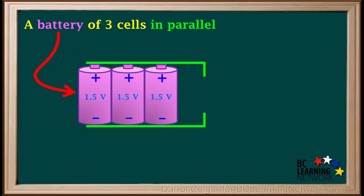When cells are arranged so that all their positive terminals are connected to one conductor and all their negative terminals are connected to another conductor, they form a battery of cells in parallel. And when cells of equal voltage are arranged in parallel, the total voltage of the battery is the same as the voltage of a single cell.